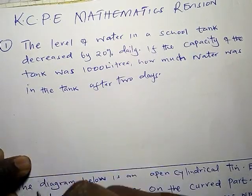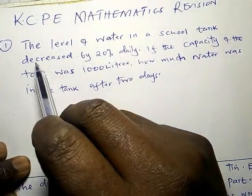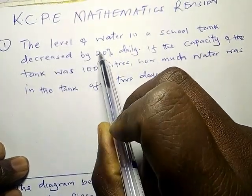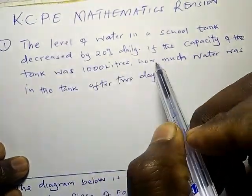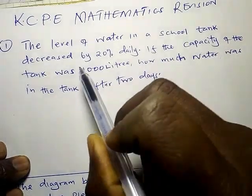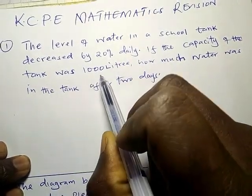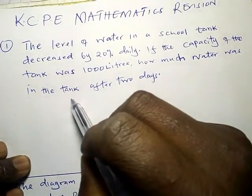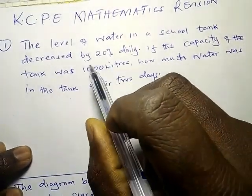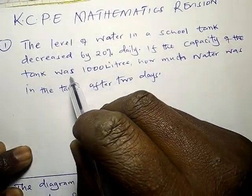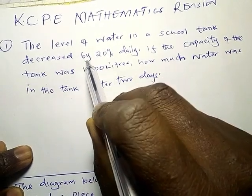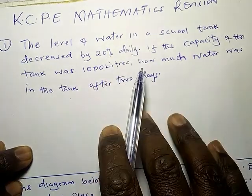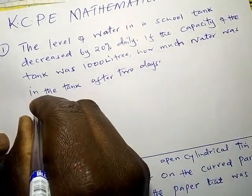Let us look at this question. The level of water in a school tank decreased by 20% daily. If the capacity of the tank was 1000 liters, how much water was in the tank after two days? This means the tank is losing water 20% every day, so let us begin from the first day.